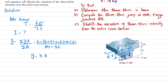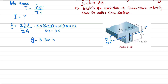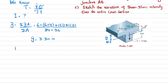This means the neutral axis lies at a distance of 3.30 inches from the top. You can see this is approximately 3 inches, so the neutral axis is located just below that point. Now that we have the neutral axis, we will move toward finding the moment of inertia.